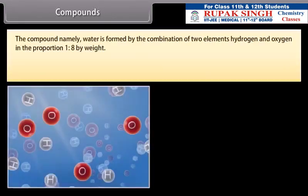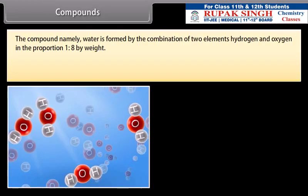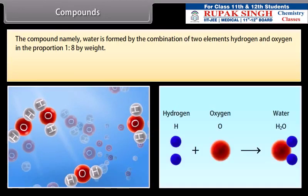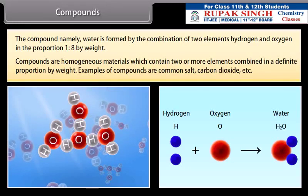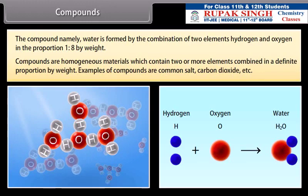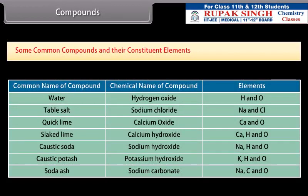The compound, namely water, is formed by the combination of two elements, hydrogen and oxygen, in the proportion 1 to 8 by weight. Compounds are homogeneous materials which contain two or more elements combined in a definite proportion by weight. Examples of compounds are common salt, carbon dioxide, etc.